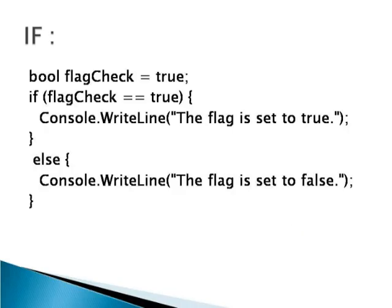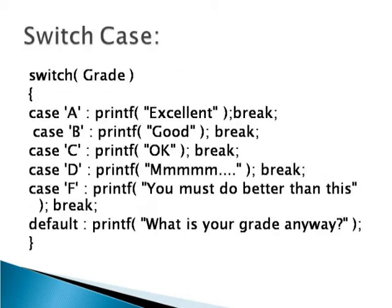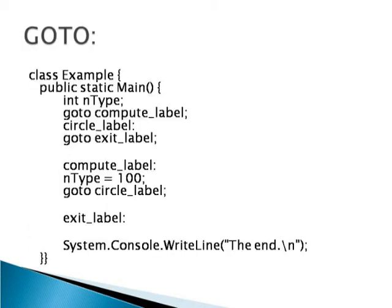This is the example coding for C sharp if statement. A boolean type flag check variable is being used here. Switch case example and goto example in C sharp.